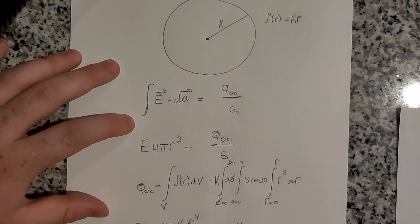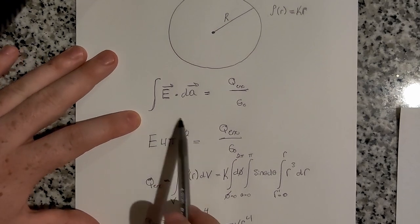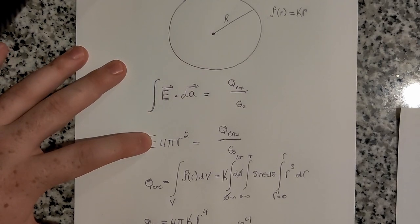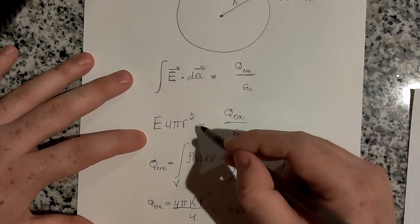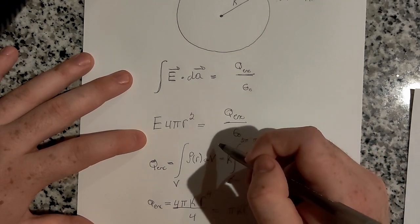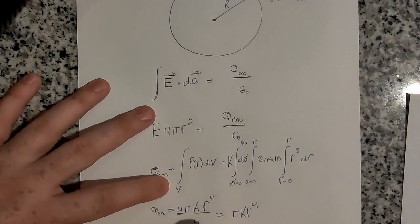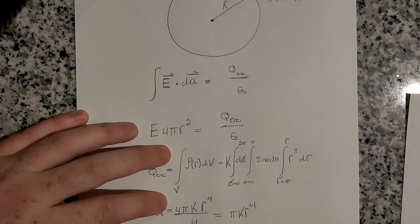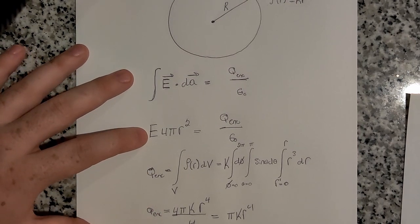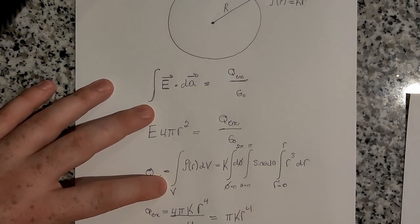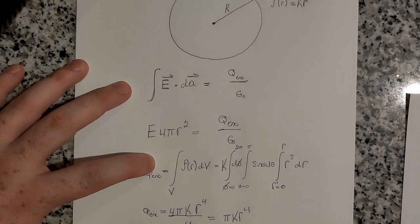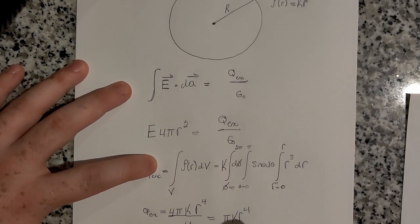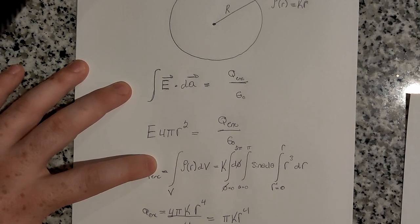And therefore, plugging q enclosed back into our equation. So we have that the electric field, I'm just going to solve it, is going to be equal to, so we plug in πkr⁴, we divide by 4πr². So that's going to give us, divided by ε₀. Actually, if we want to keep 1 over 4πε₀, then we'll keep π on top. So we'll get πkr⁴ divided by 4πε₀, which is just equal to kr² over 4ε₀. And this will be directed in the radial direction.